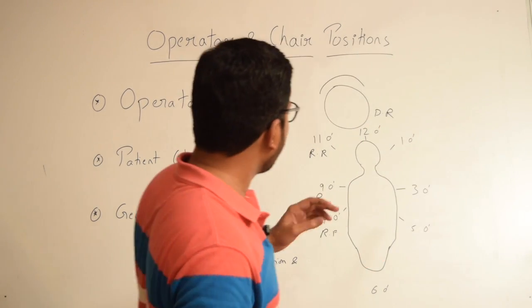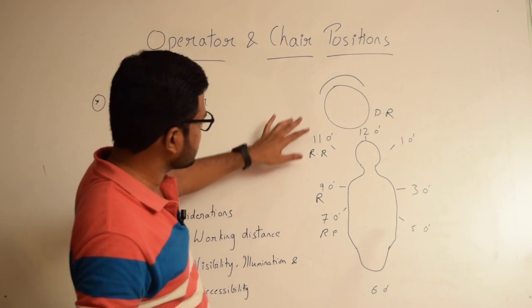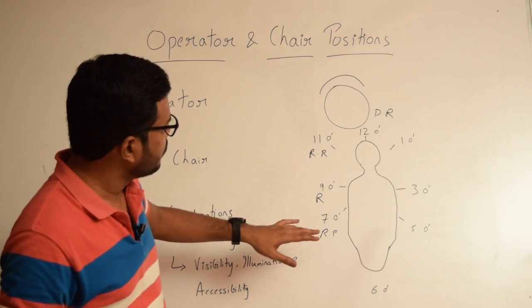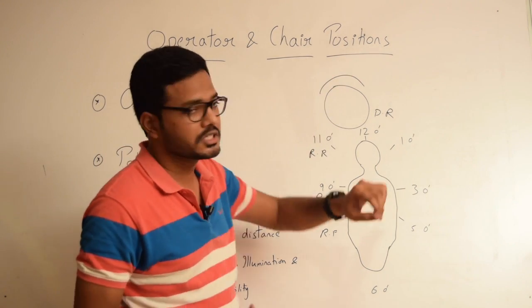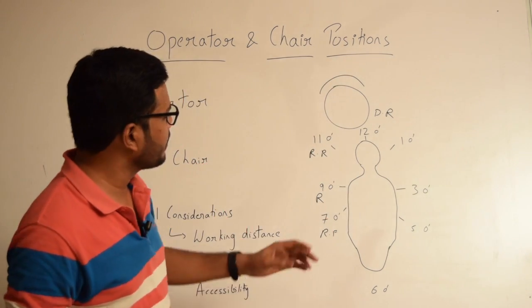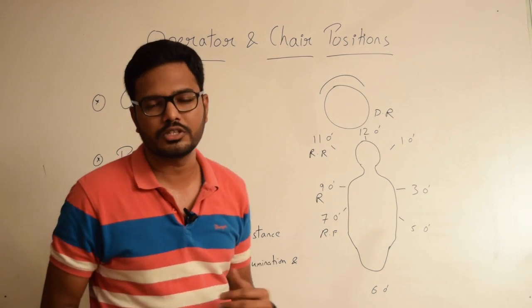Coming to the operator positions, we have different operator positions. For a right-handed operator we have 7 o'clock, 9 o'clock, 11 o'clock, and 12 o'clock positions. Whereas for a left-handed operator we have 1, 3 o'clock, and 5 o'clock positions.